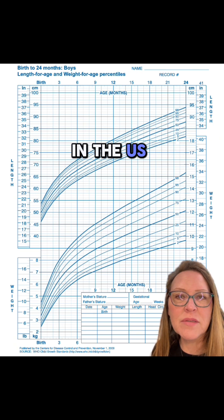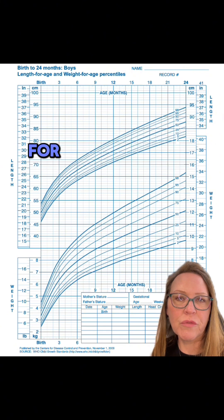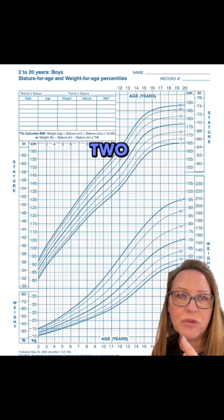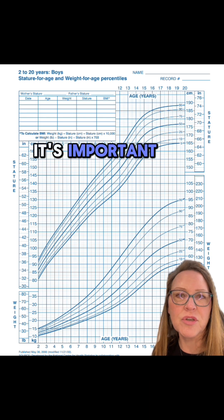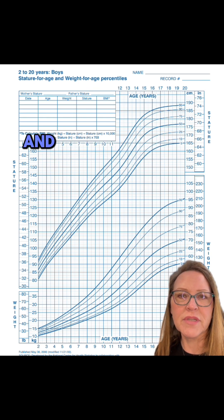In the U.S., we use the World Health Organization growth chart for children from birth to age 2, and we use CDC growth charts for ages 2 to 18. It's important to use the correct chart for the child's age and circumstances.